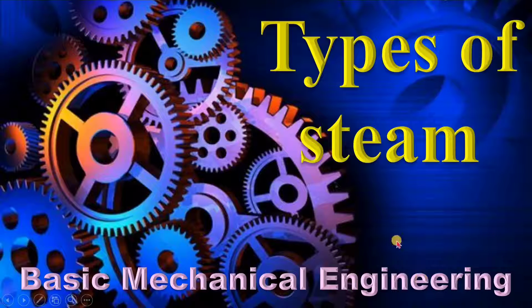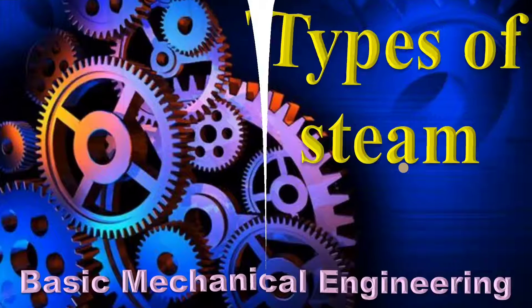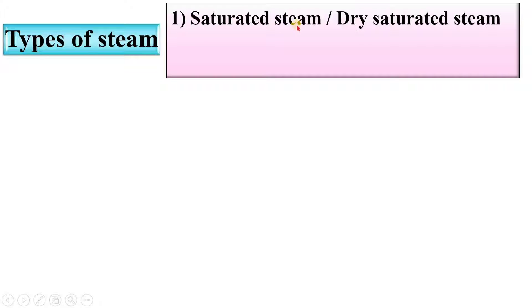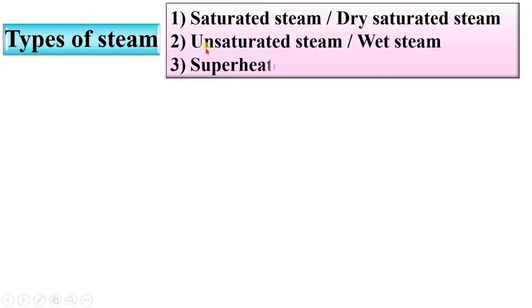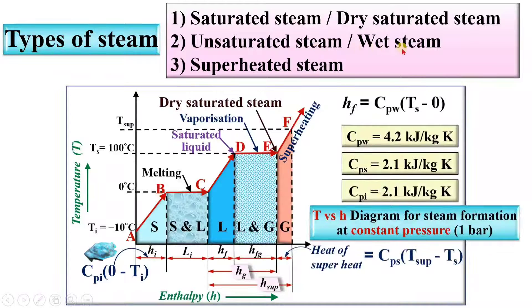Welcome to my basic mechanical engineering playlist. Today I am going to explain types of steam. Basically there are three types of steam: first, saturated steam, also known as dry saturated steam; second, unsaturated steam, also called wet steam; and lastly, superheated steam. We are going to discuss these three types one by one with the help of a temperature versus enthalpy diagram of steam formation at constant pressure.